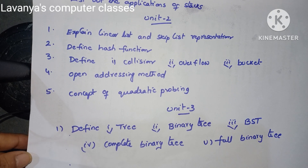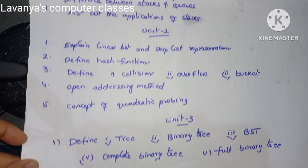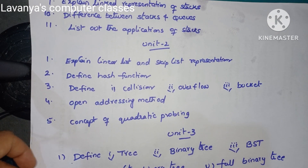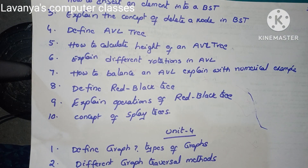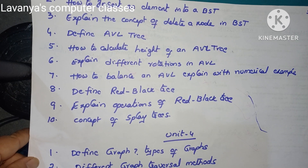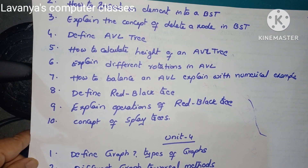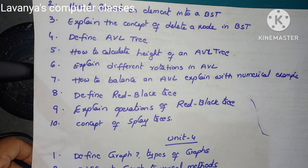Unit 3 questions are: define tree, binary tree, binary search tree, complete binary tree, and full binary tree — definitions with numerical examples. Also: how to insert an element into a BST (binary search tree); and explain the concept of deleting a node from a BST.